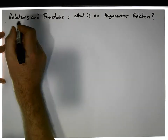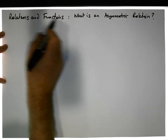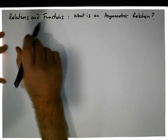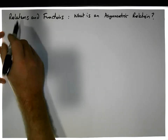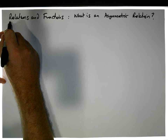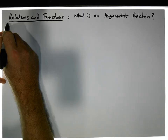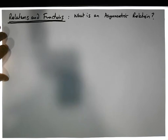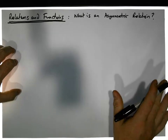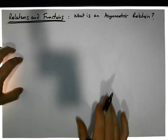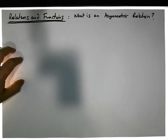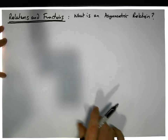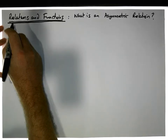Hi guys, this is Jonathan Lambert with the Mathematics Development and Support Service with the National College of Ireland. In this short video, another in our series dealing with relations and functions, we're going to define what it means for a relation to be asymmetric. The next video after this will deal with what's known as an anti-symmetric relation.